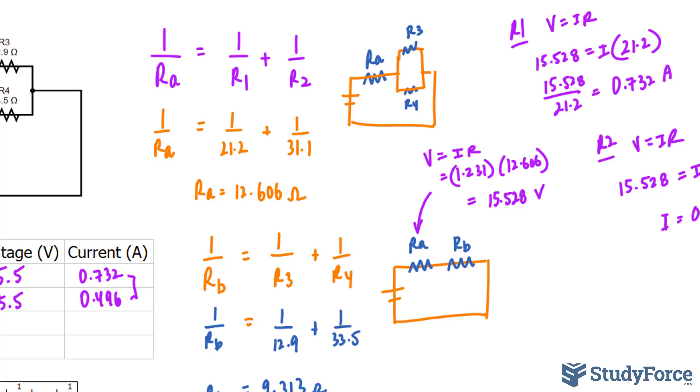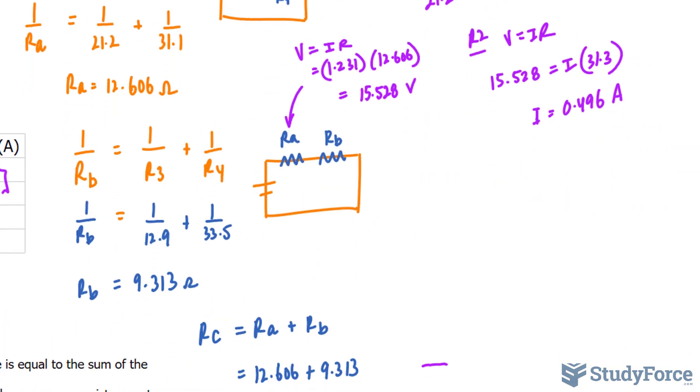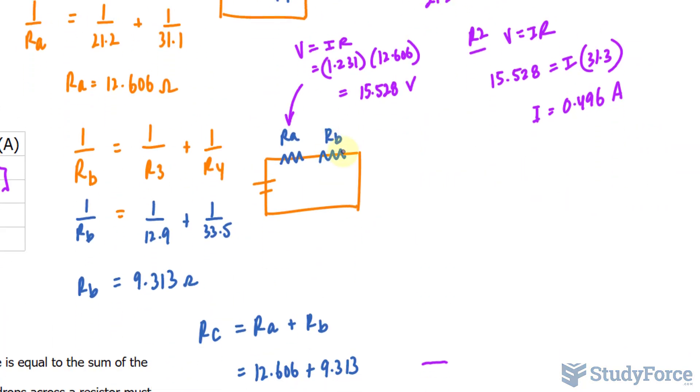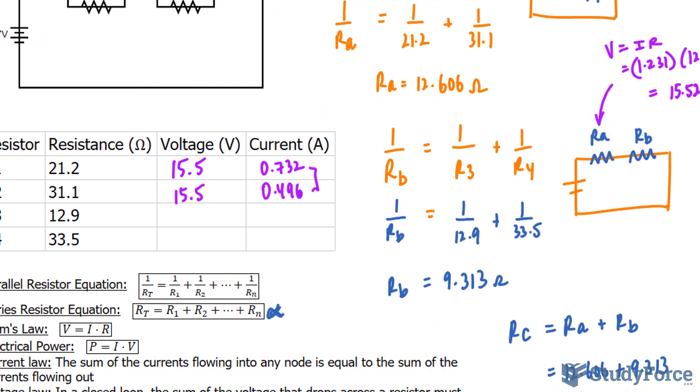Okay, let's use this exact same approach now for RB, which consisted of R3 and R4. RB, we found, had a resistance of 9.313. So, let me write down this information. V is equal to IR. The voltage, this one is interesting. We can't use 27 volts anymore, because there is a voltage drop after we go through RA.